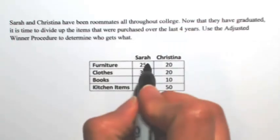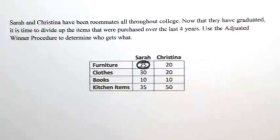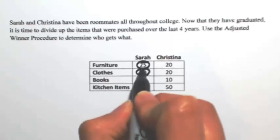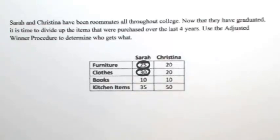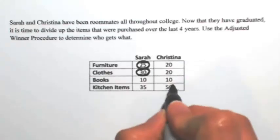So with furniture, Sarah has 25 over the 20, so Sarah would get the furniture. For the clothes, Sarah gave it more points. The books are tied, so we'll leave that alone for a minute. With the kitchen items, Christina gave more points.